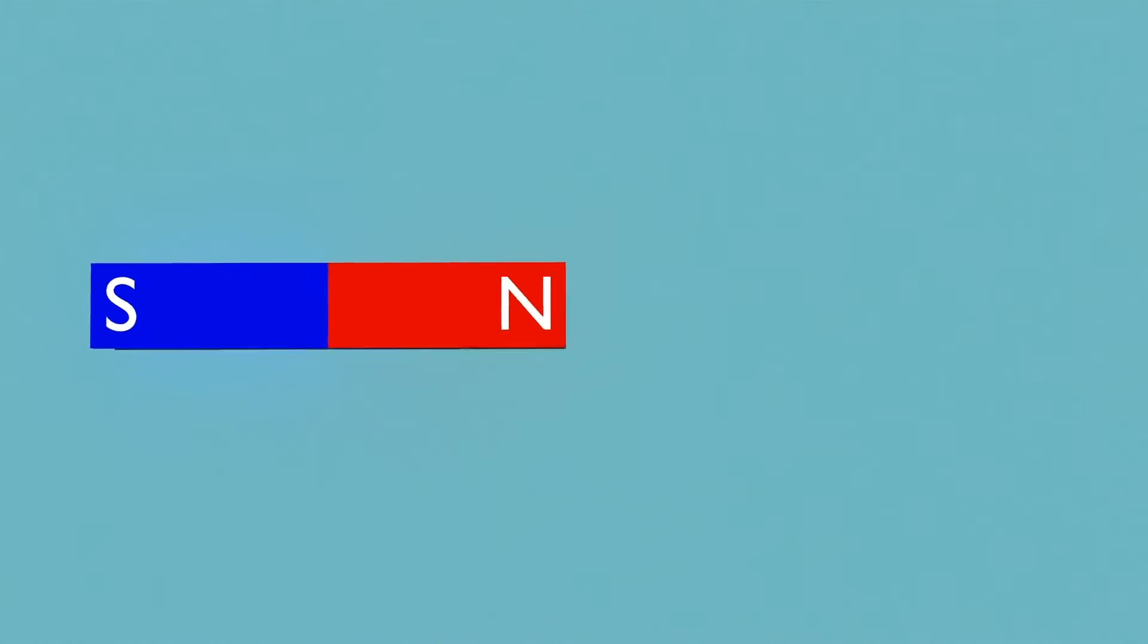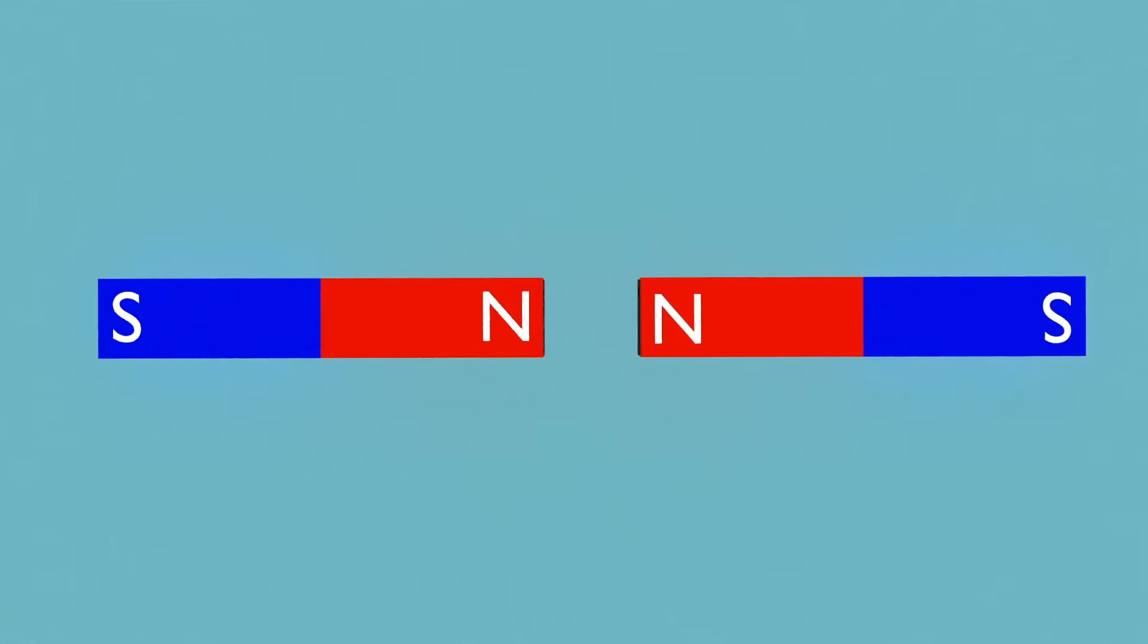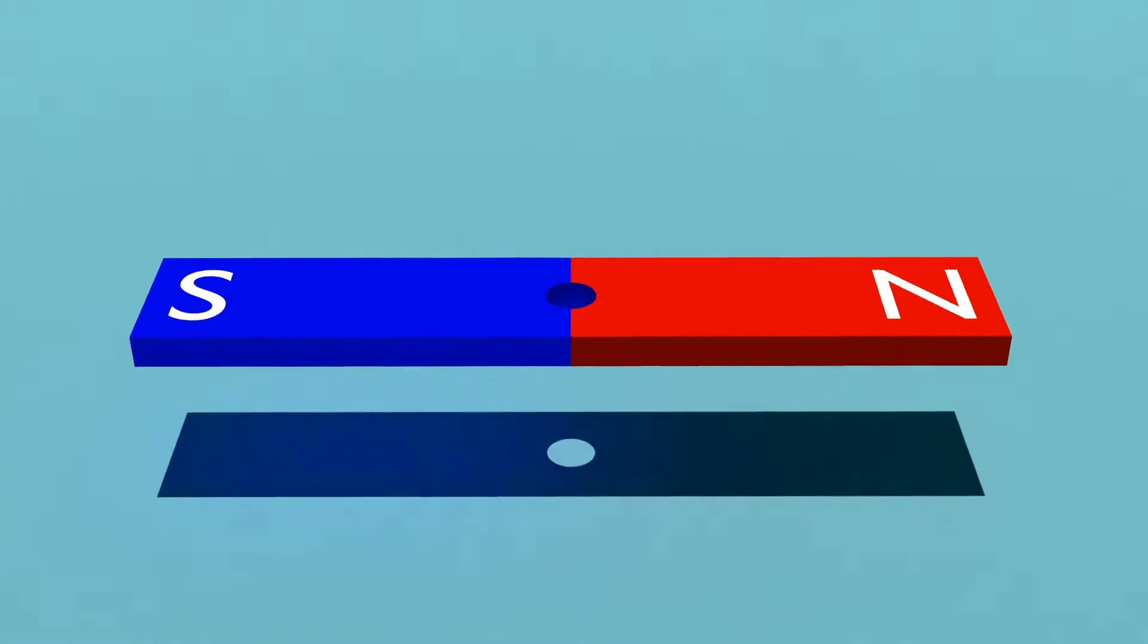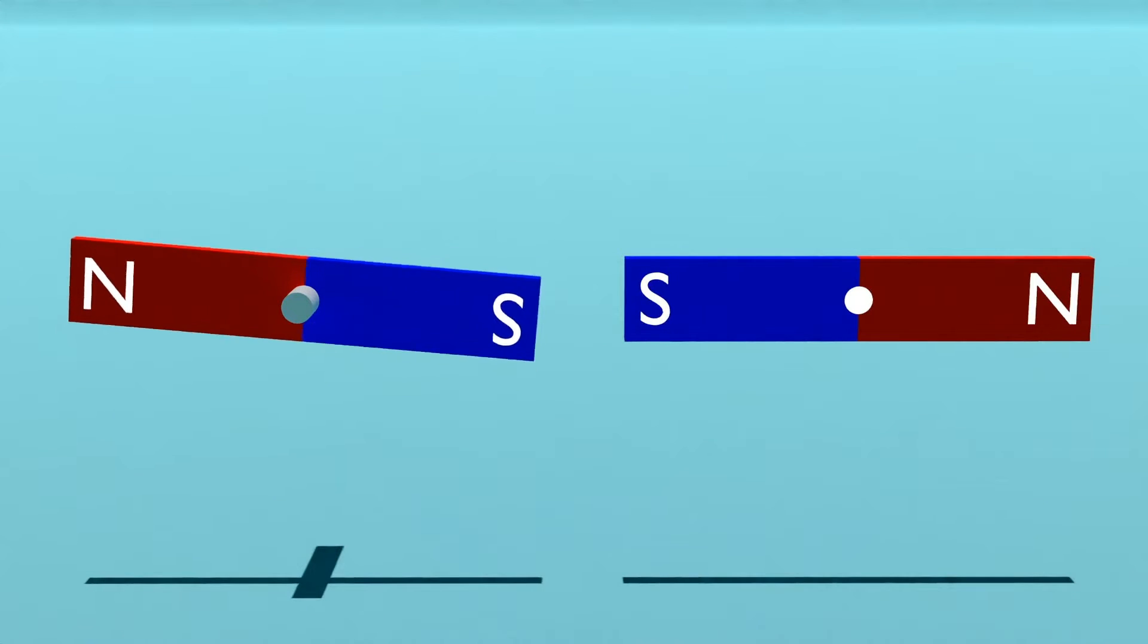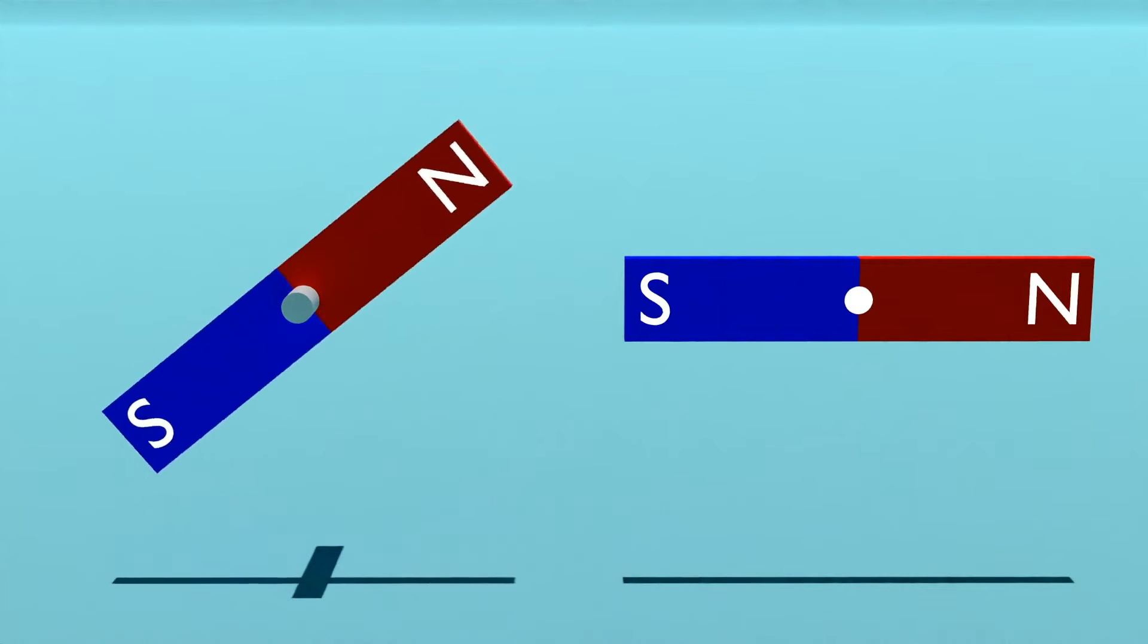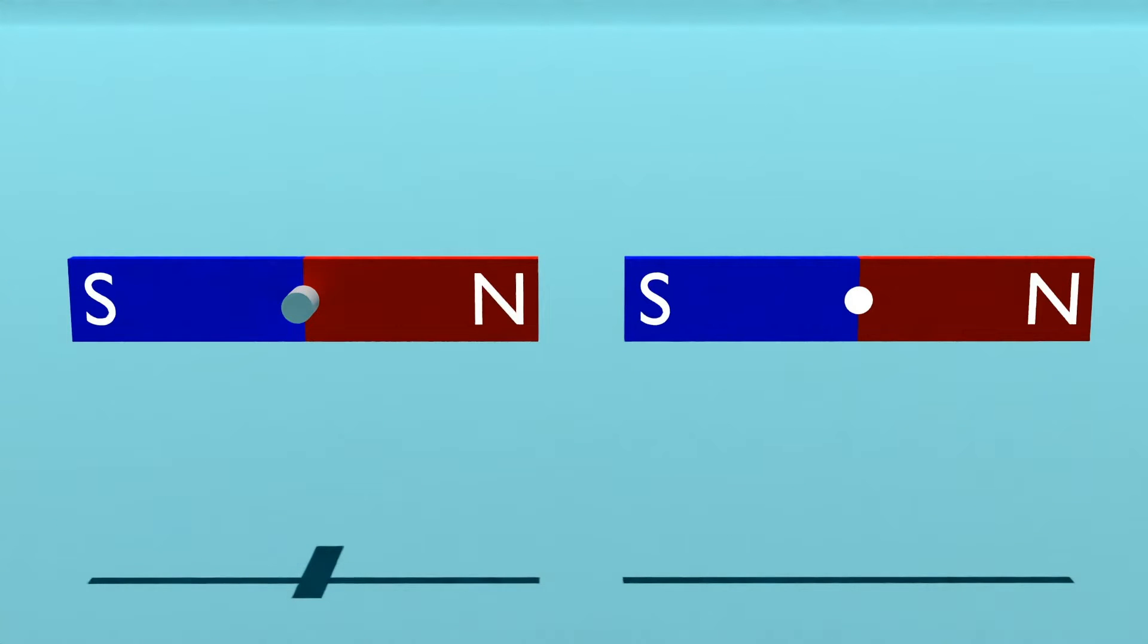If we take another magnet, we can see that similar poles repel and opposite poles attract each other. Let's drill a hole in this magnet and put it onto something that allows it to spin. Then when we bring another magnet near it, our spinning magnet will immediately line up with the fixed magnet in such a way that similar poles repel and opposite poles attract.